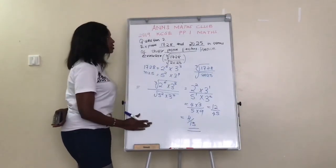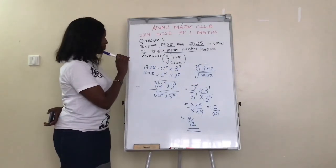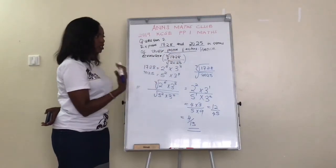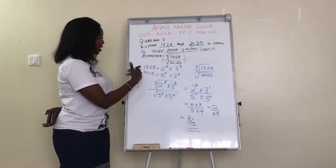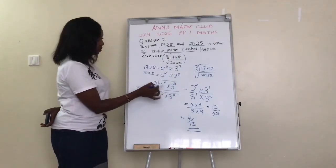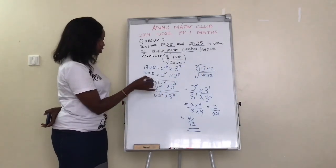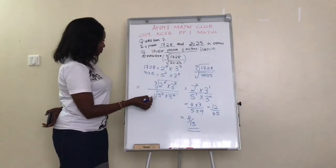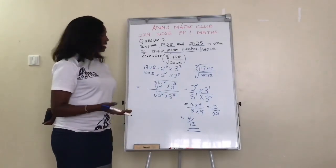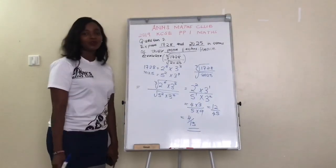This becomes 12 over 45 — since 4 times 3 is 12 and 5 times 9 is 45. When you cancel that, you're left with 4 over 15. So this becomes your answer. This is how you were expected to do this question: first express in terms of prime factors using the tree method, then substitute the prime factors into the numerator and denominator, simplify by removing the roots using powers, and this is the answer. Now let's go to question number 3.